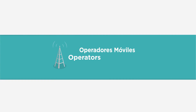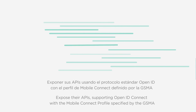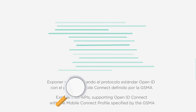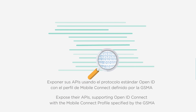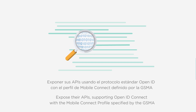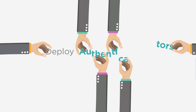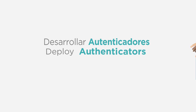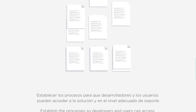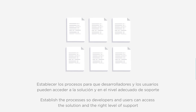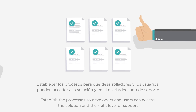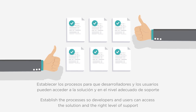To make MobileConnect available, operators need to expose their APIs supporting OpenID Connect with the mobile profile specified by the GSMA. They then need to deploy authenticators and ensure appropriate business processes are in place so that developers and end users can access the solution with the right level of support.